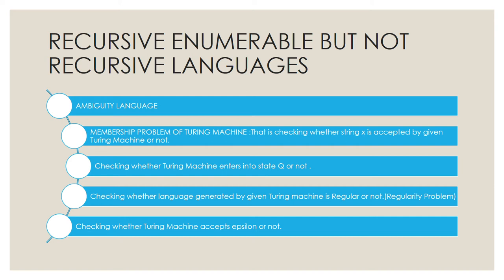The third example is checking whether a Turing machine enters a state q or not. Note the contrast with the earlier recursive example: previously it was specified 'within 100 steps,' meaning we could determine it in a finite number of steps, making it recursive. Here, no such finite condition is given — it is simply whether the Turing machine enters state q or not — so this is RE but not recursive.